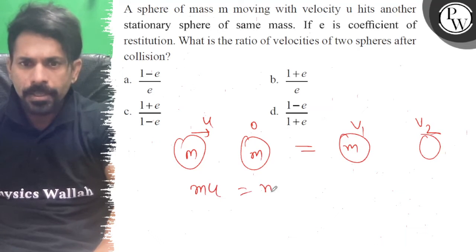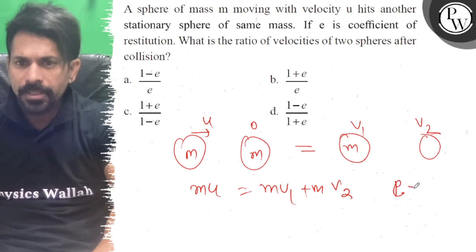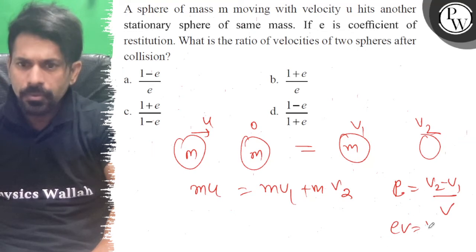By conservation of momentum, m u equals m v1 plus m v2. And the coefficient of restitution is e equals v2 minus v1 upon u. So e v is equal to v2 minus v1.